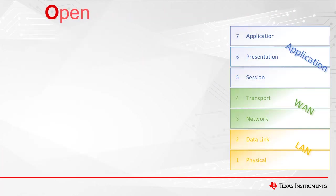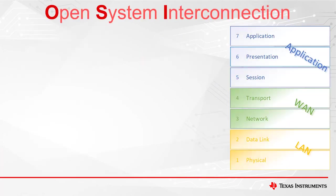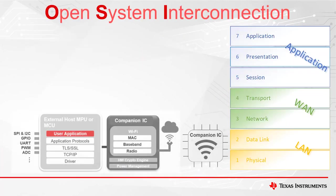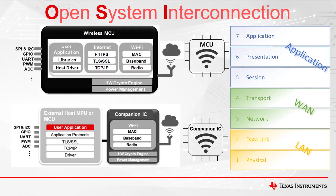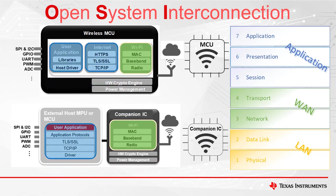There are two main system architectures that designers may choose from: a companion IC and a wireless MCU. Each architecture correlates to the relevant OSI layer boundaries. Texas Instruments offers both architectures, so let's discuss the characteristics of each and how to choose the best fit option.